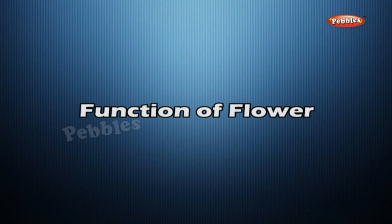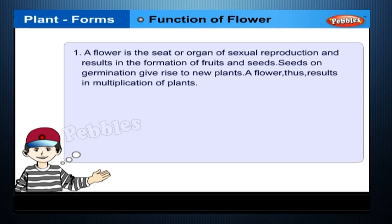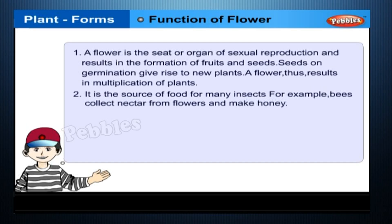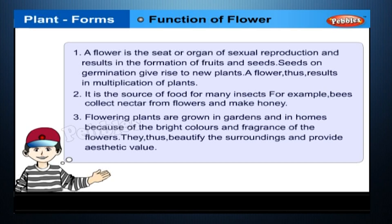A flower is the organ of sexual reproduction and results in the formation of fruits and seeds. Seeds on germination give rise to new plants, so a flower results in the multiplication of plants. Flowers are also a source of food for many insects; for example, bees collect nectar from flowers and make honey. Flowering plants are grown in gardens and homes because of the bright colours and fragrance of the flowers, which beautify the surroundings and provide aesthetic value.